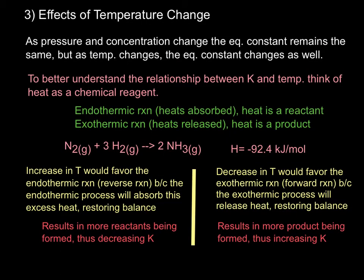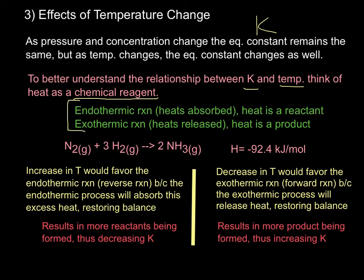Our third condition is when temperature changes. When we talk about the first two conditions — pressure and concentration — when they change, our equilibrium constant remains the same. But as temperature changes, the equilibrium constant K changes as well. To better understand the relationship between K and temperature, let's think of heat as a chemical reagent — meaning a part of our chemical equation, either as a reactant or product. In an endothermic reaction, heat is being absorbed, so heat would be a reactant. In an exothermic reaction, heat is released, so heat is a product.